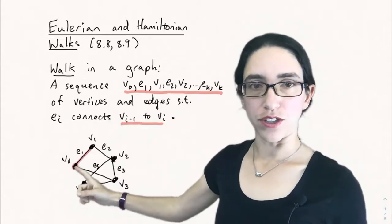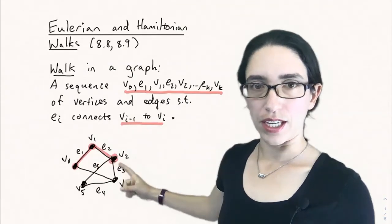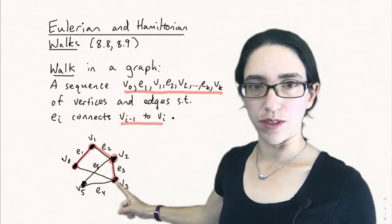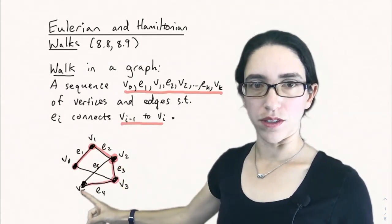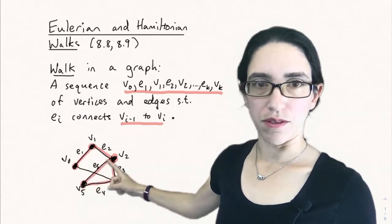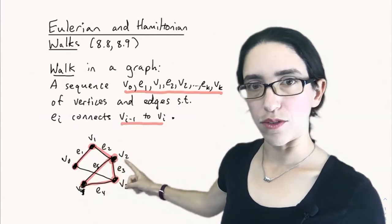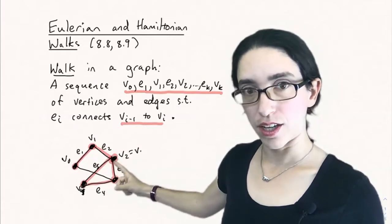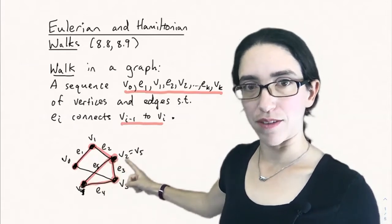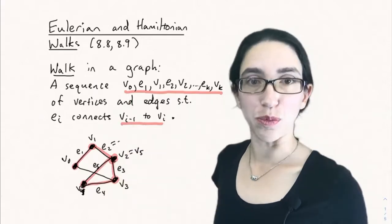So here's an example of a walk. If we start at v0 and then go to e1 to v1, e2 to v2, e3 to v3, e4 to v4, and e5. Sometimes you can have a walk that repeats a vertex or repeats an edge. So e5 should lead to v5. It's okay if v2 and v5 are the same vertex. It's just a sequence of the vertices, and it can have repeats.